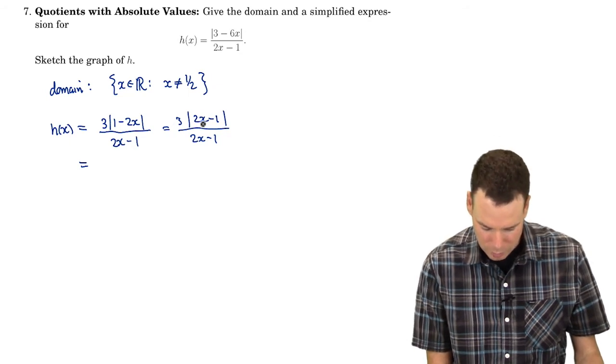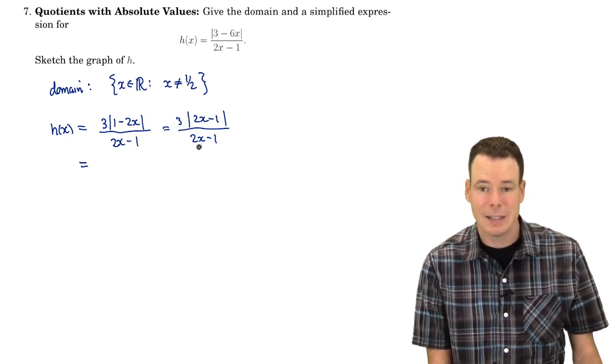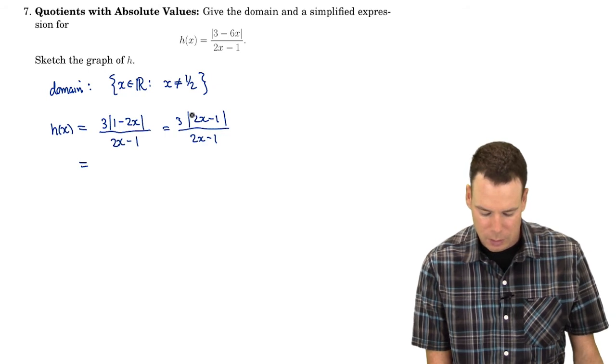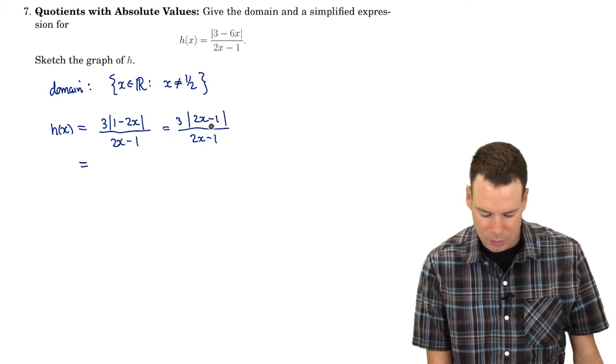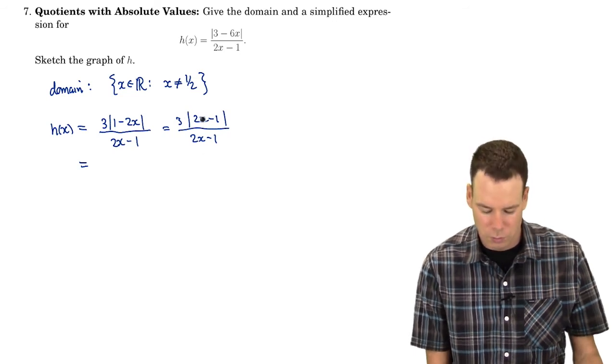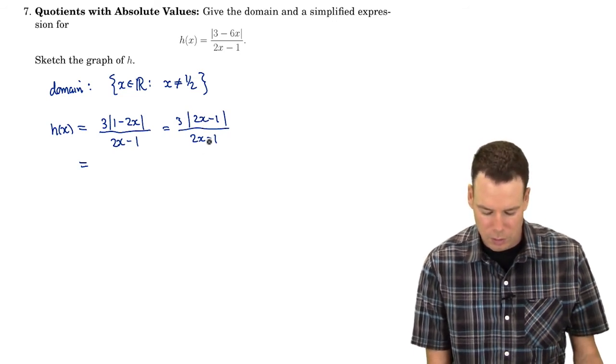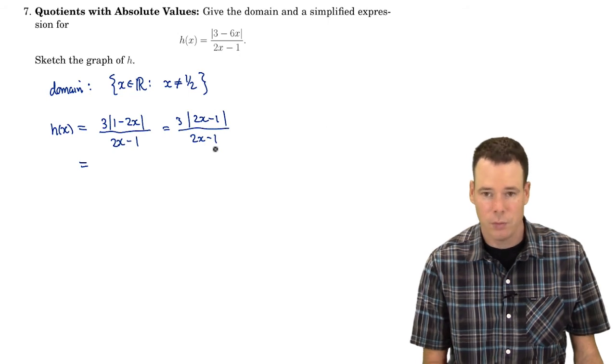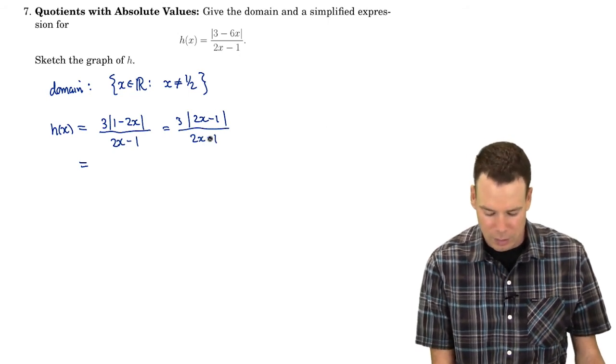And now I use the fact that absolute value can really be defined as a piecewise function. And I want to do that because I noticed 2x minus 1 is in top and bottom so I'd like to cancel them. The problem is that there's going to be a sign issue that happens. When 2x minus 1 is positive they'll cancel off directly and give me a result of 1 in the end. When 2x minus 1 is negative they cancel off with leaving a negative 1.